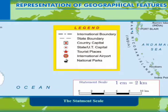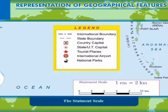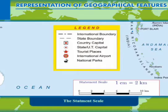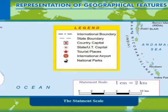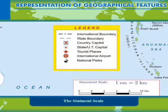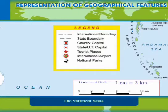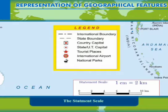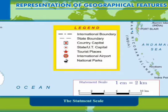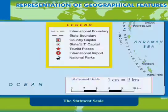Some examples of statement scale are: 1 cm is equal to 2,500 km, and 1 inch is equal to 200 miles. This scale has a disadvantage — it cannot be used universally in all countries, as not all countries use the metric system or any universal unit of measurement.